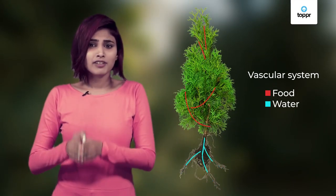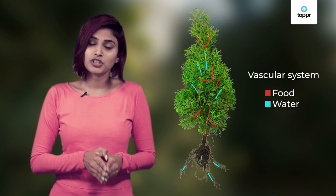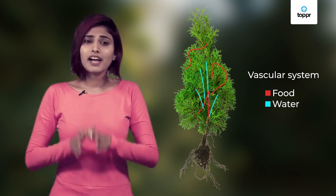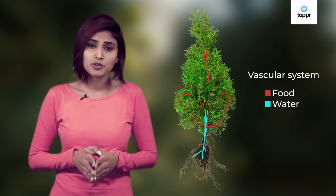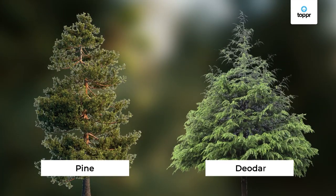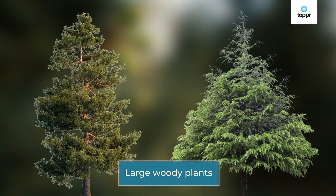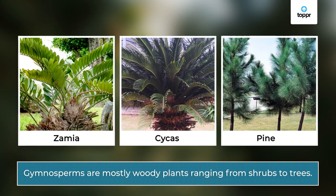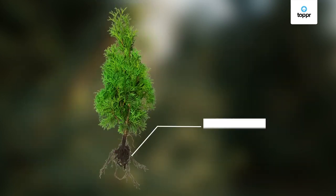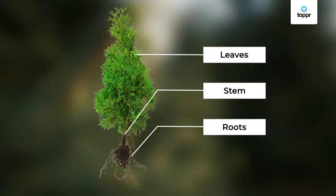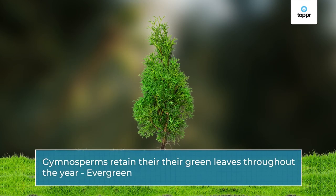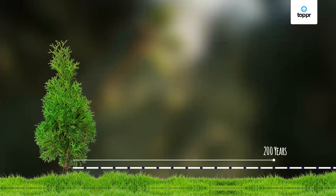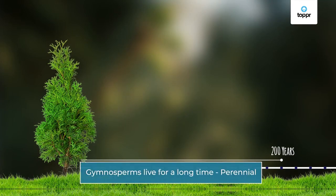Gymnosperms are the division of kingdom Plantae which includes all plants that bear naked seeds. They possess a well-developed vascular system for transportation of food and water. Common examples of gymnosperms are pine and deoda, both of which are large woody plants. In fact, gymnosperms are mostly woody plants, ranging from shrubs to trees. They also have true roots, stems, and leaves, tend to retain their green leaves throughout the year — in other words, they are evergreen — and they tend to live for a really long time, which is why they are called perennial.